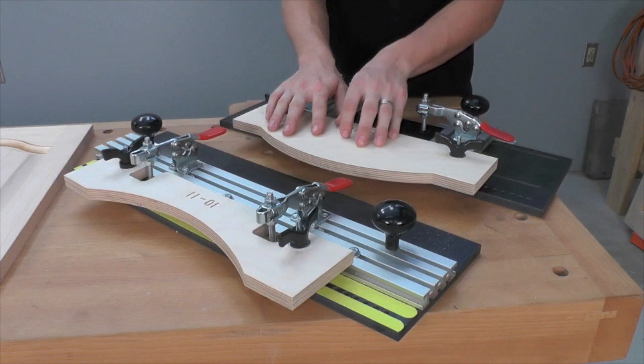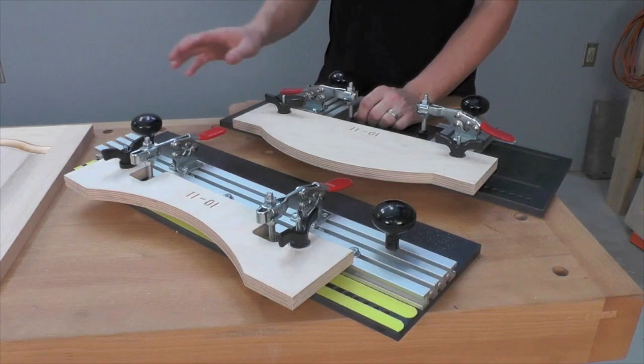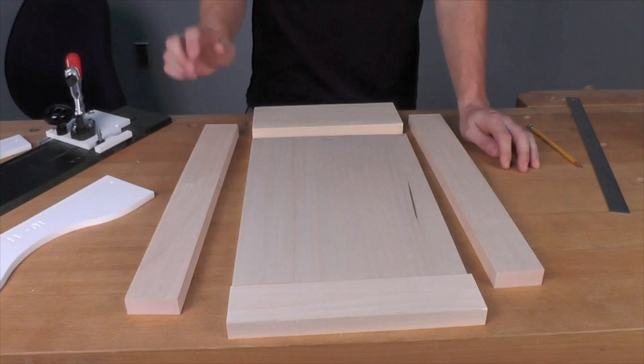The nice thing about the heavy duty frame and panel master is it's compatible with both the router table and the shaper table. So if you have a shaper table that you'd like to make your cabinet doors on, this is the set for you. Let's go ahead and I'll break down just how easy it is to make a door using this system.